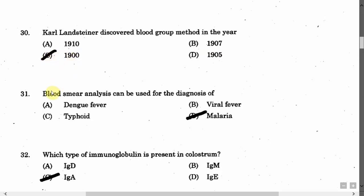The next question is: Blood smear analysis can be used for the diagnosis of — Option A: Dengue fever. Option B: Viral fever. Option C: Typhoid. Option D: Malaria. The correct answer is Option D, that is malaria.